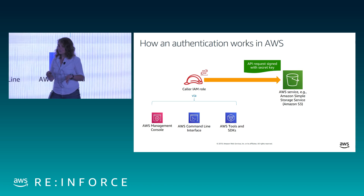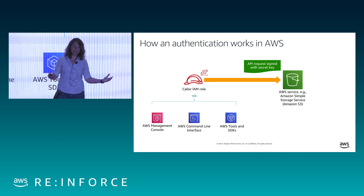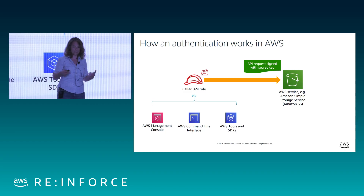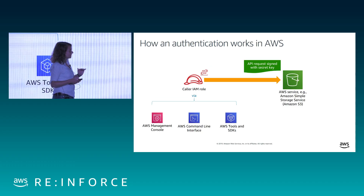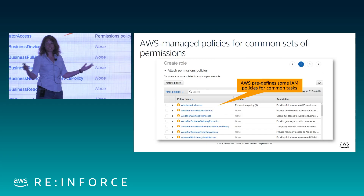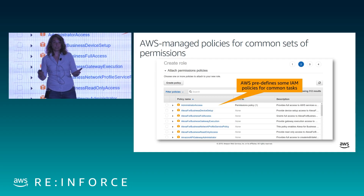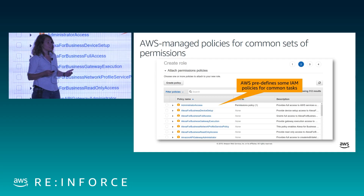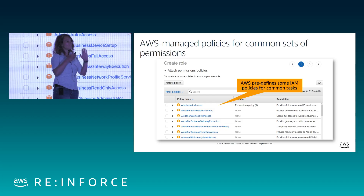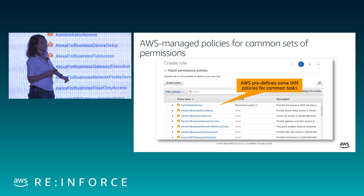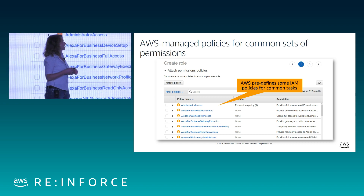Who you are is only half the story. The other half is authorization. Now that we know who you are and that it's actually you making this API call to say S3, what are you allowed to do? That's where policies come in. In order to be allowed to do something — to make any kind of request in AWS — you have to have a policy that gives you permission to do so.